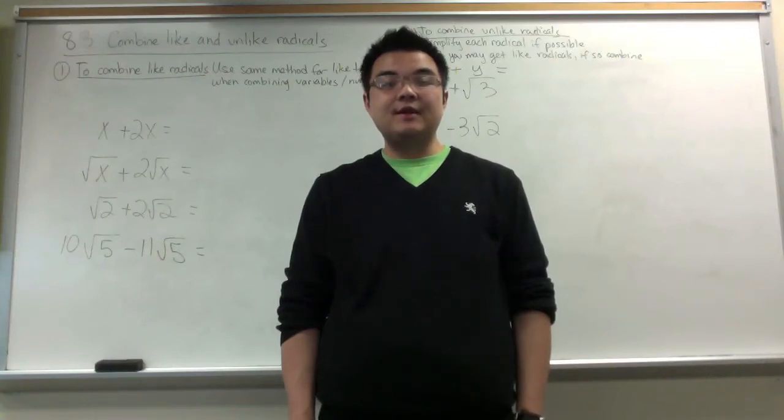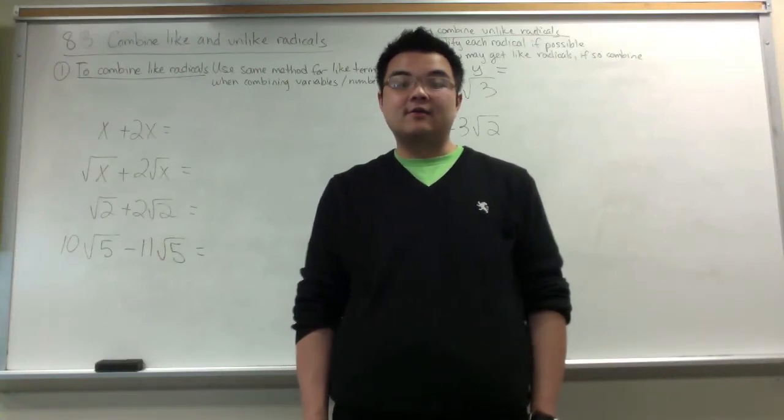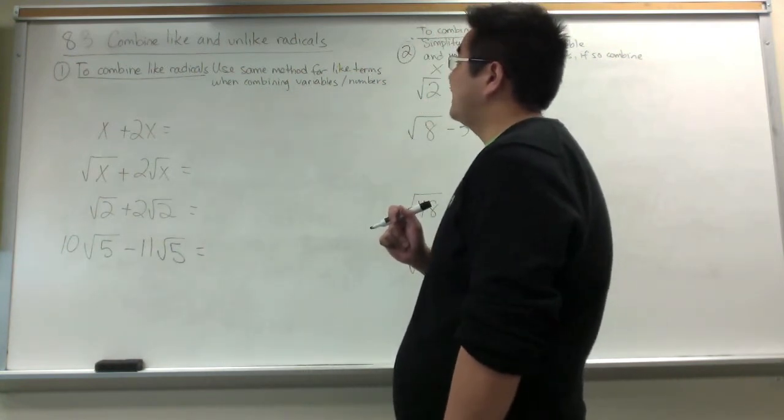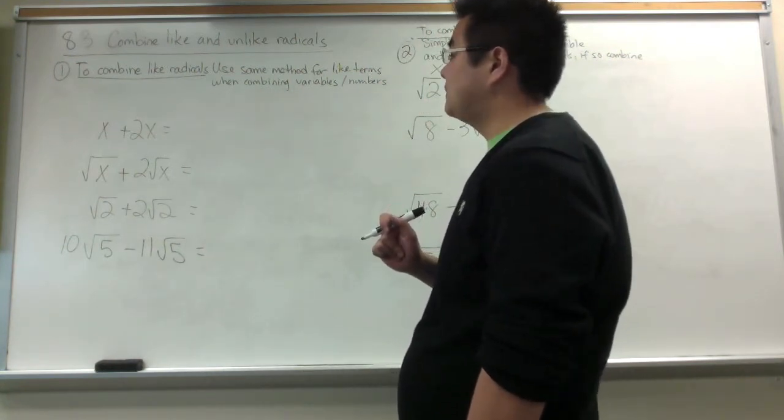These are the notes for section 8.3, Combine Like and Unlike Radicals. To combine like radicals, we're going to use the same method for like terms when combining variables and numbers.